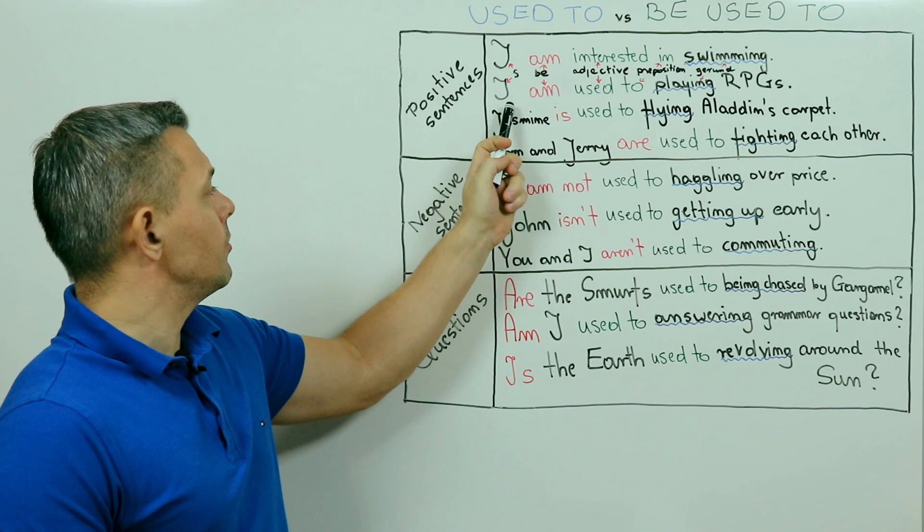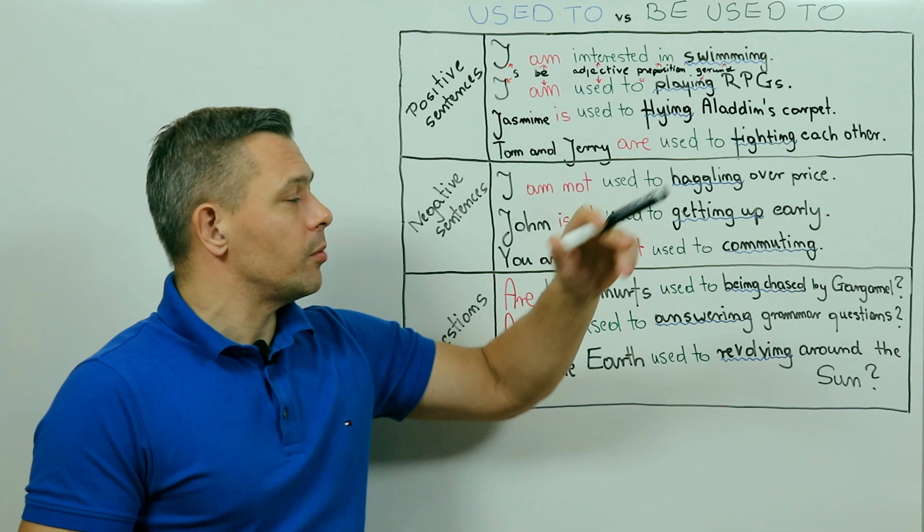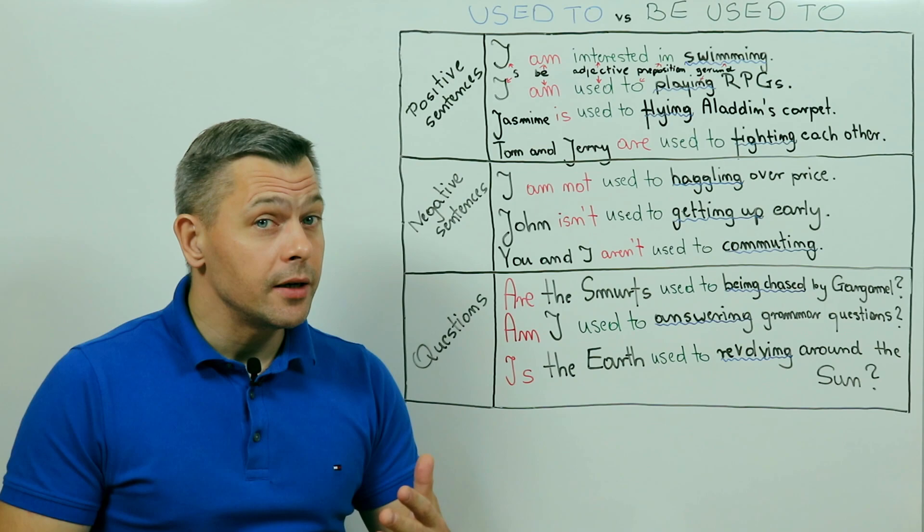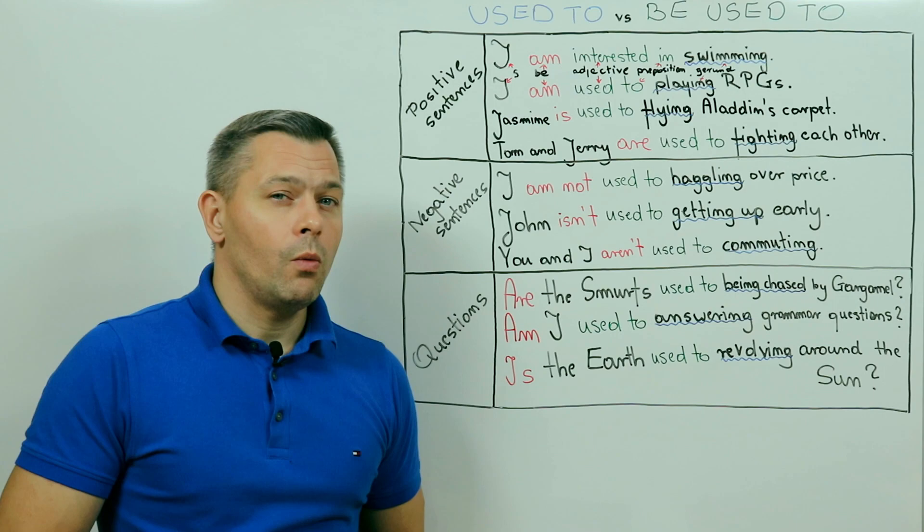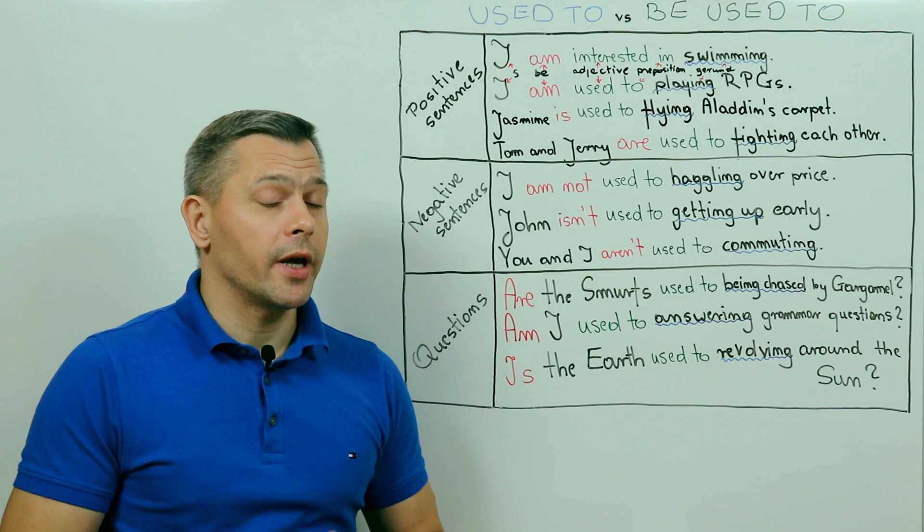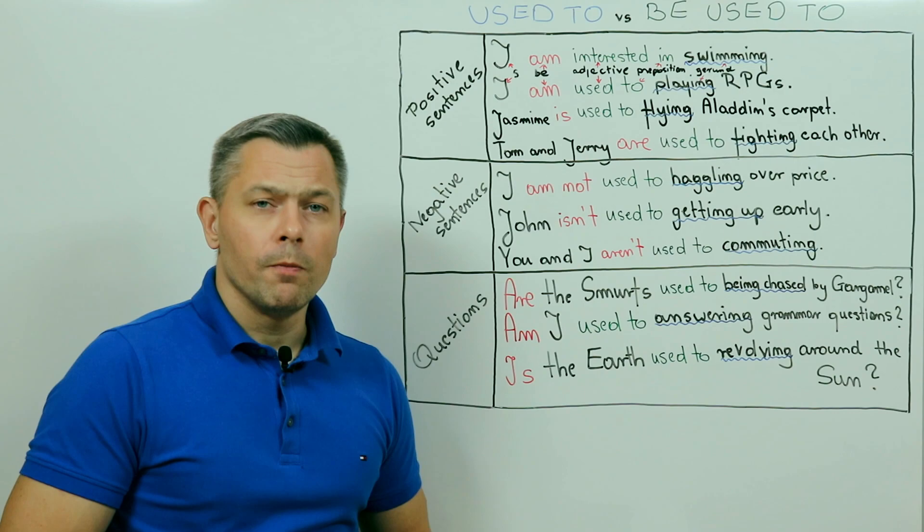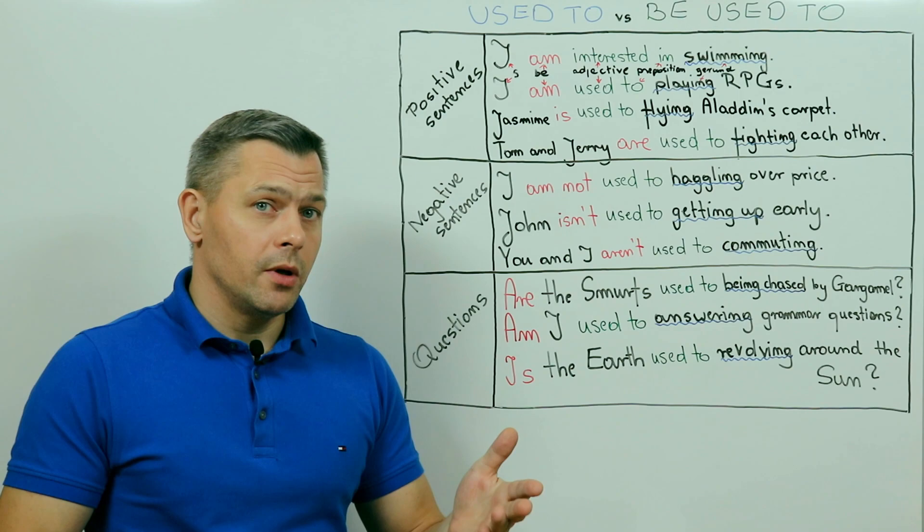Another example. Jasmine is used to flying Aladdin's carpet. She does it repeatedly. She is accustomed to being picked up by Aladdin and then flying to the movies together. They are familiar with such situation occurring. And the final example. Tom and Jerry are used to fighting each other. Well, in fact, it is basically all they do. Tom the cat is constantly in pursuit of the clever mouse who steals food and who, thanks to her cunning abilities and luck, manages to outweigh the attacker. So Tom is used to chasing Jerry. Jerry is accustomed to Tom's attempts to capture her. And the audience are familiar with the distraction and mayhem that are the result of their rivalry. So that's pretty much it when it comes to positive be used to sentences.